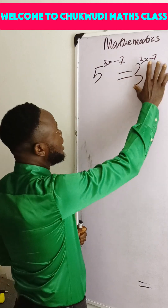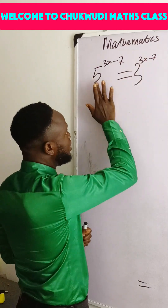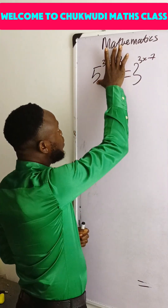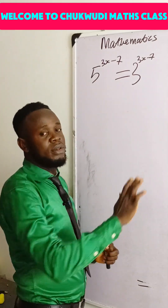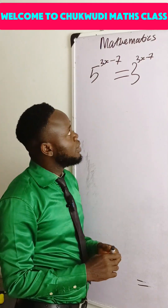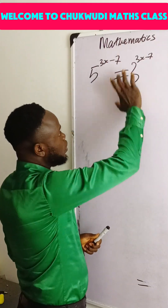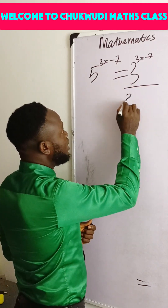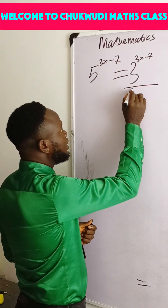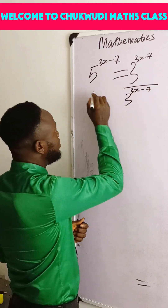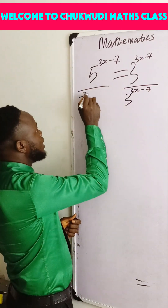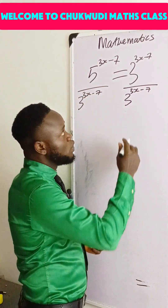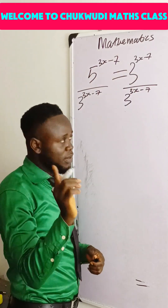What we are going to do is divide both sides. Carry this one and divide each of them. So if I do that, I have 3 to the power 3x minus 7 divided by 3 to the power 3x minus 7. Anything divided by itself gives you 1.